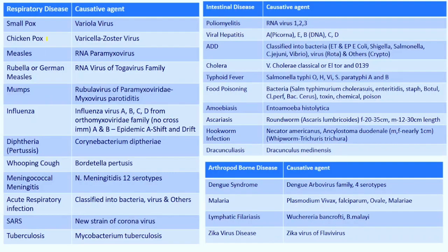Smallpox is caused by the variola virus. For chickenpox — don't worry if you don't remember the exact agent name. In exams you can write it as smallpox virus, chickenpox virus, measles virus. Nobody is going to object that answer, but be careful not to write it as chickenpox fungi or chickenpox bacteria — the specific answer is always better.